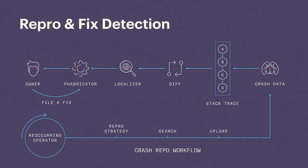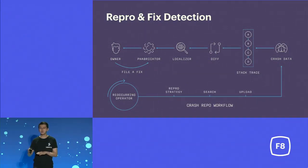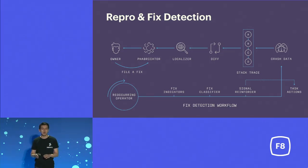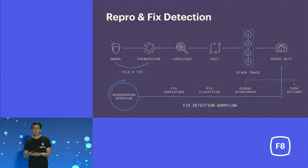In addition to Sapiens' evolution workflow, we have a few other workflows that work together to provide debugging support. For example, the crash reproduction workflow periodically fetches Sapiens-reported crashes and validates if they can be reproduced consistently. And Sapiens' fix detection workflow automatically collects a set of fix indicators and tries to classify if the crash has been fixed or not. If it has been fixed, Sapiens can close relevant tasks. If it's not fixed — and especially if the crash is hitting users — Sapiens can file tasks to alert relevant developers.